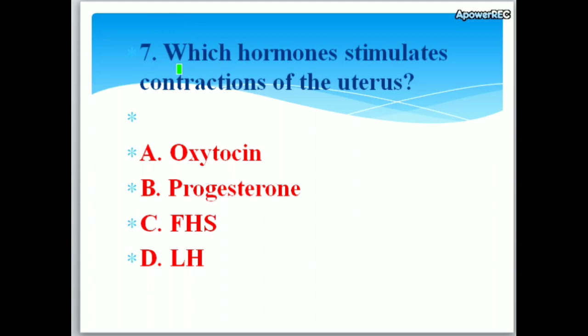Which hormone stimulates contraction of the uterus? Options: A. Oxytocin, B. Progesterone, C. Follicle stimulating hormone, D. Luteinizing hormone. The correct answer is oxytocin. Oxytocin stimulates contraction of the uterus.